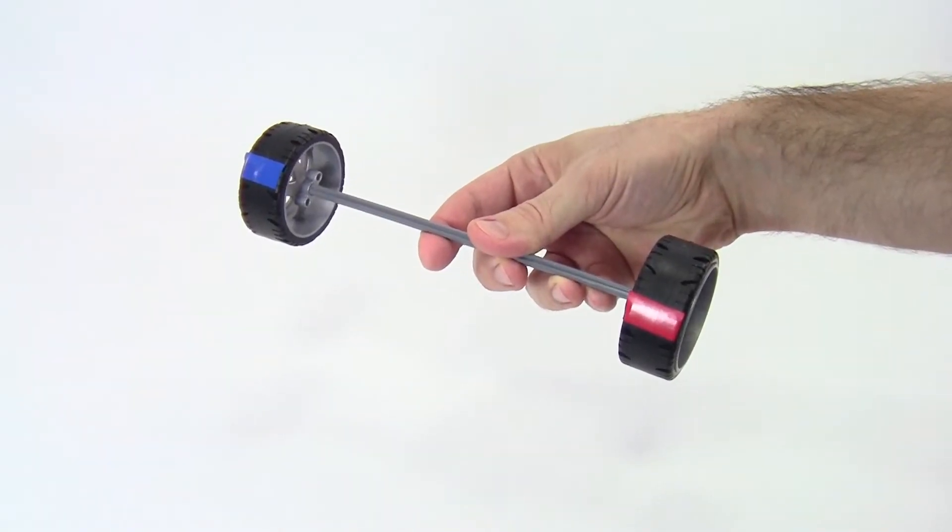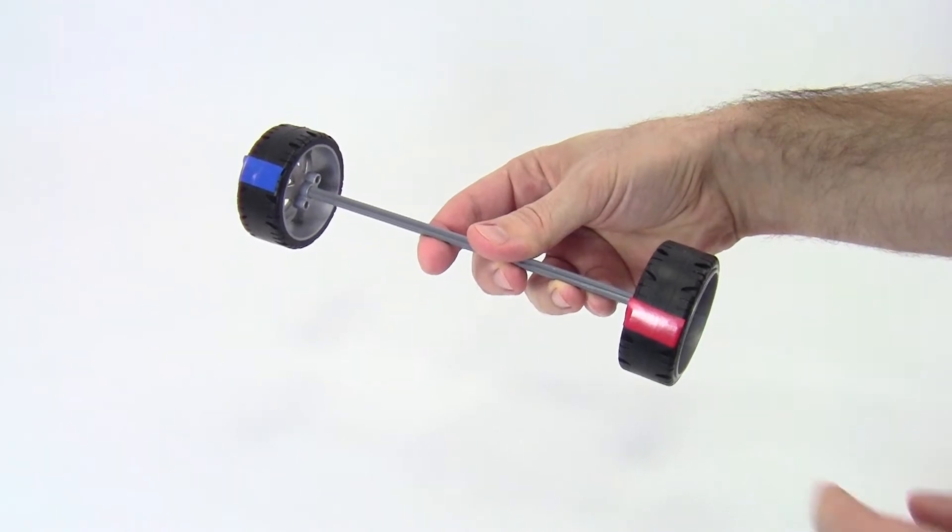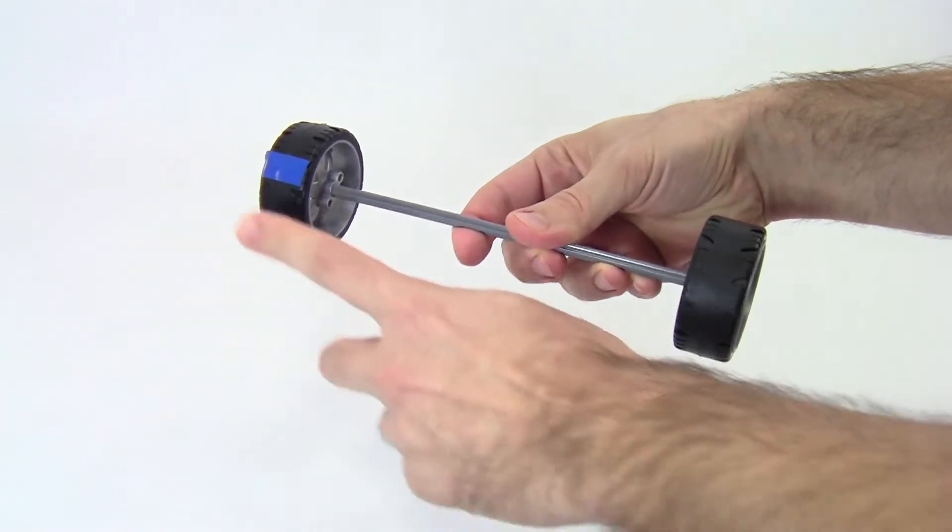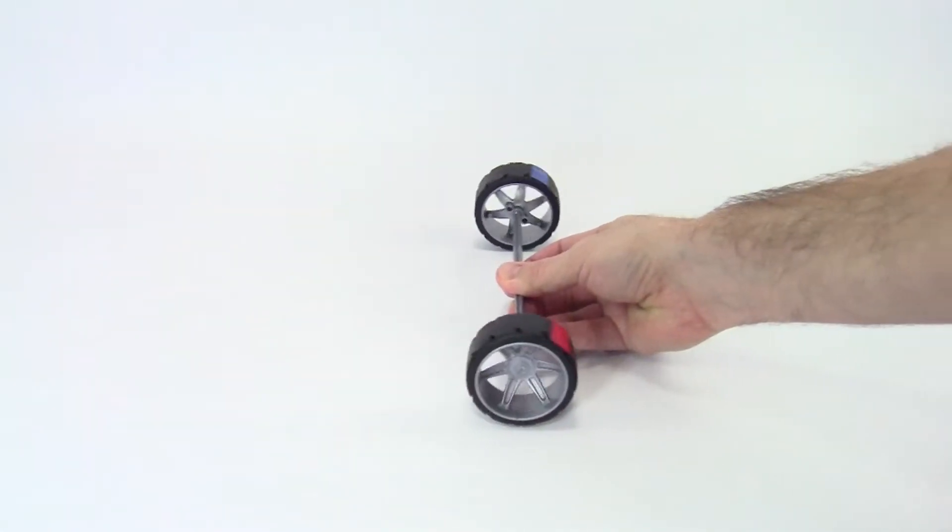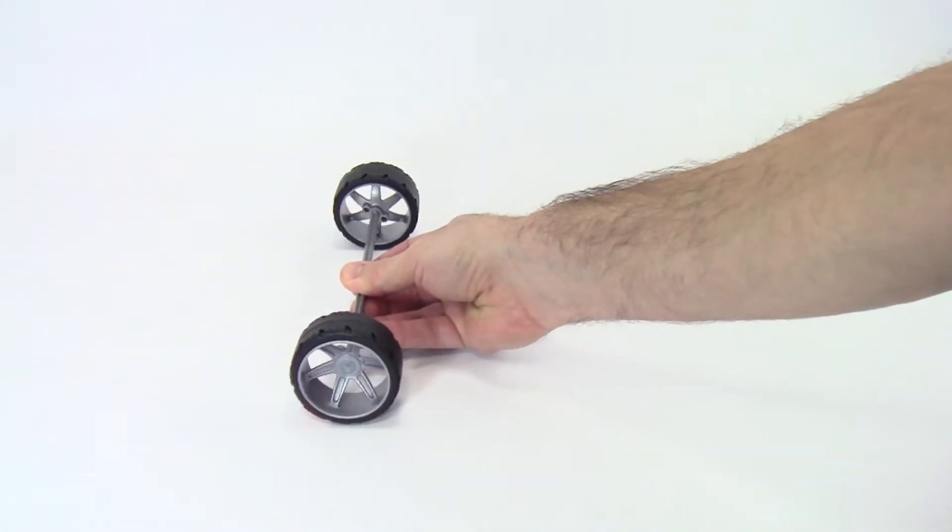Before we get started building, let's talk about why we would need a differential. Here I have an axle with two wheels that can rotate independently. When this axle moves in a straight line, the wheels rotate at the same speed, which you can see here by observing the red and blue pieces of tape.